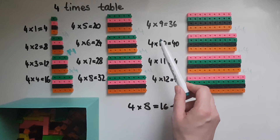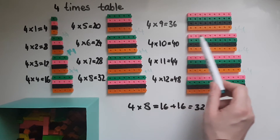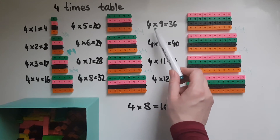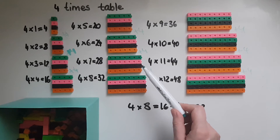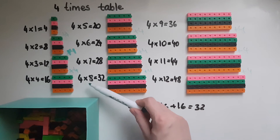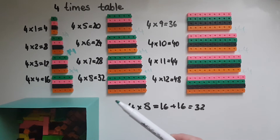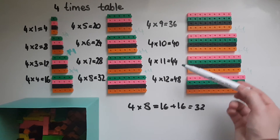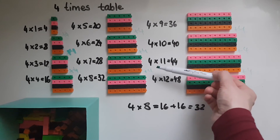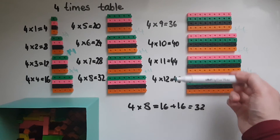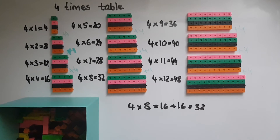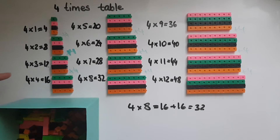If you know four times ten is forty, take away four to get four times nine, which is thirty-six. Take away another four to get four times eight, which is thirty-two. Or from forty, add another four to get four times eleven, and another four gives us four times twelve.